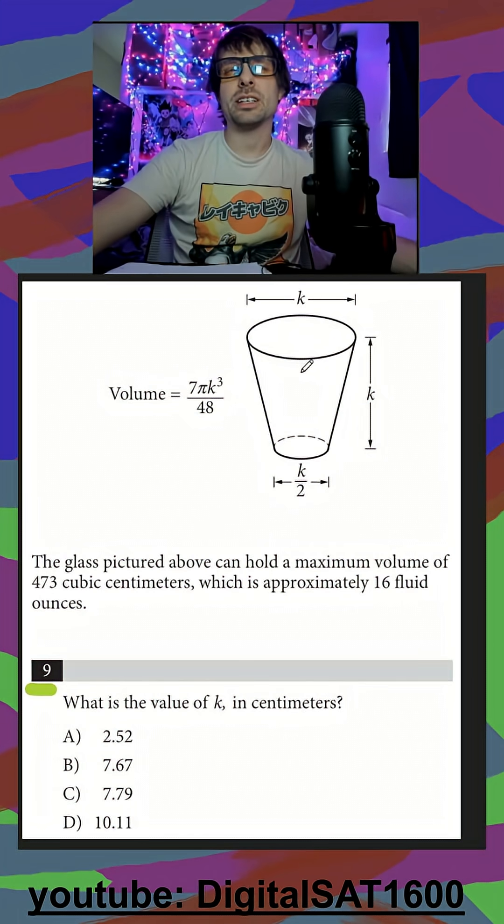This is going to be a two-parter. I see we have a glass that's smaller at the bottom than it is at the top. We have a volume formula for it, but they also tell us that it has a maximum volume of 473, and they want us to solve for k.